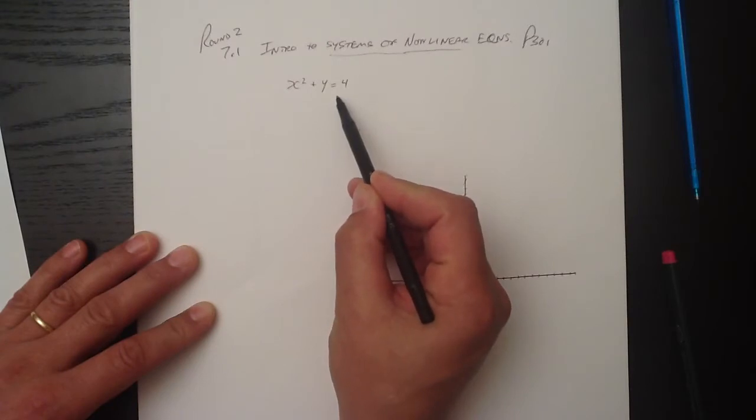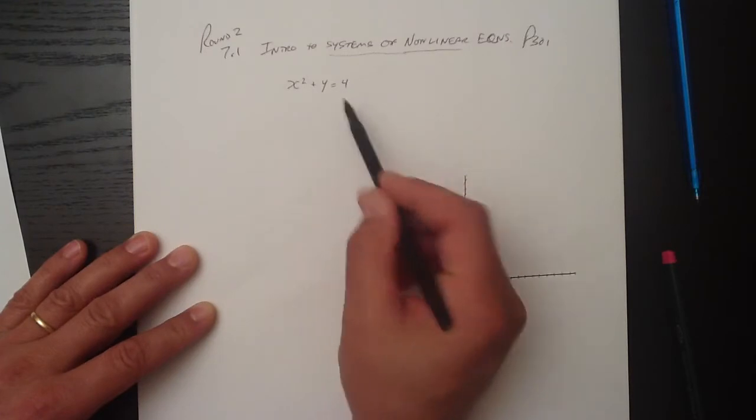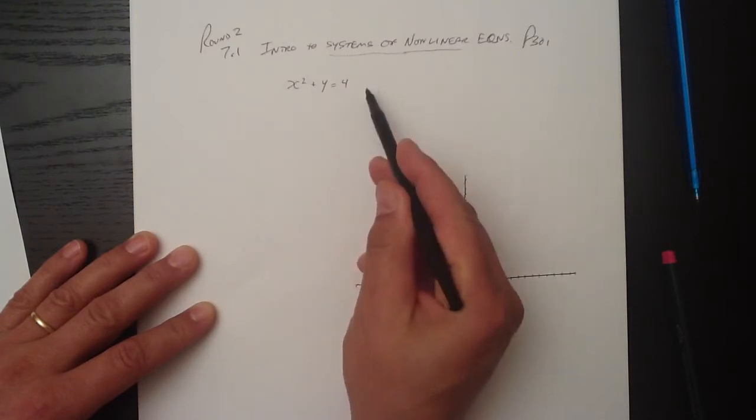Now the second equation here could be a straight line. It could be a curve. It's still called a nonlinear system because at least one of the relations is not linear.